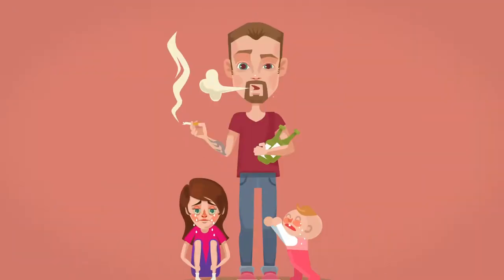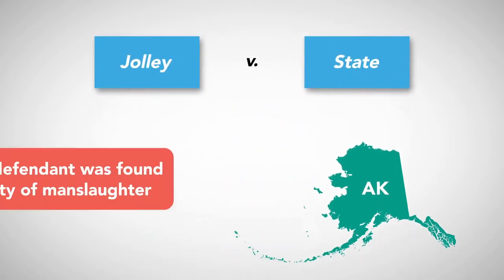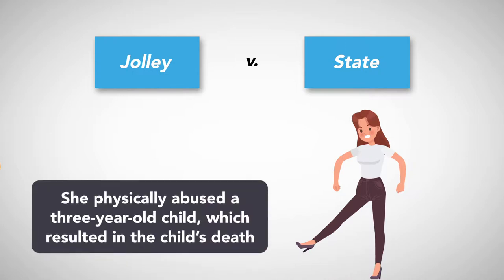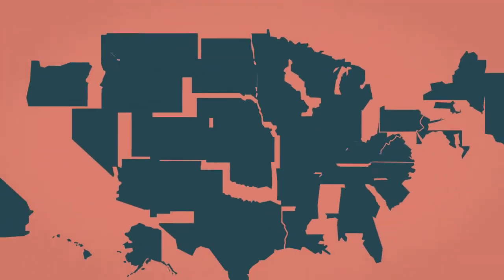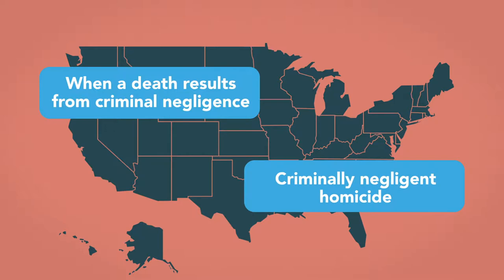Involuntary manslaughter is also a common charge when mistreatment or neglect of children results in their deaths. In the Alaska case Jolie v. State, the defendant was found guilty of manslaughter after she physically abused a three-year-old child, causing the child's intestines to rupture, which resulted in the child's death. Some states apply involuntary manslaughter when a death results from criminal negligence, while others have created a separate, lesser homicide crime called criminally negligent homicide.